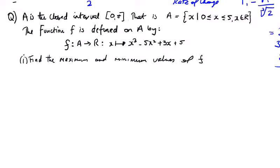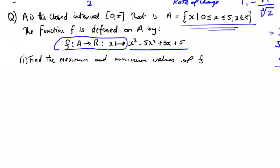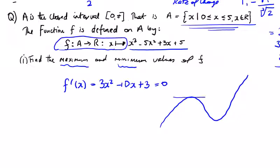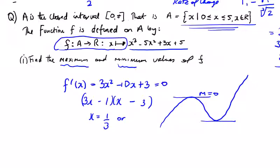The final question in the calculus section: on the closed interval [0, 5], f(x) is a cubic function and we're asked for the maximum and minimum values. Differentiating: f'(x) = 3x² − 10x + 3. Setting equal to 0 and factorising: (3x − 1)(x − 3) = 0, giving x = 1/3 or x = 3.